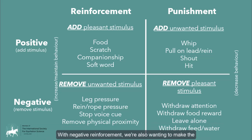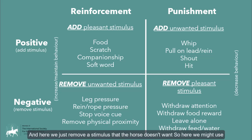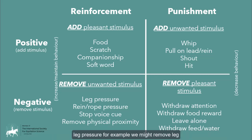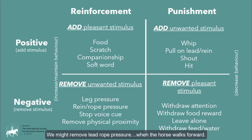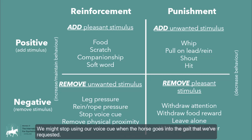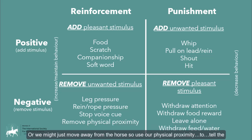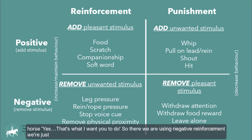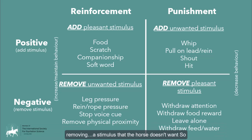With negative reinforcement, we're also wanting to make the behavior more likely in the future, but here we remove a stimulus the horse doesn't want. For example, we might use leg pressure and remove it when the horse does what we've asked. We might remove lead rope pressure when the horse walks forward, stop using a voice cue when the horse enters the gate, or move away from the horse — using our physical proximity to say yes, that's what I want.